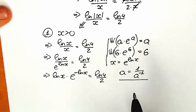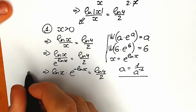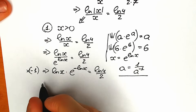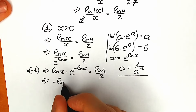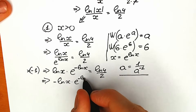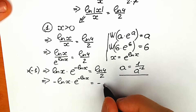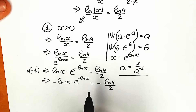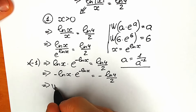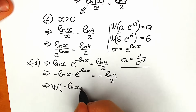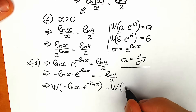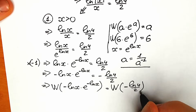After multiplying both sides by −1, we have: −ln(x) · e^(−ln x) = −ln4 / 2. Now we have the form a·e^a where a = −ln(x), so we can apply the Lambert W function to both sides. Applying W gives us: W(−ln(x) · e^(−ln x)) = W(−ln4 / 2).